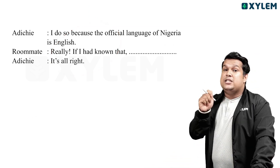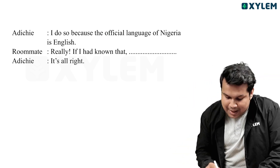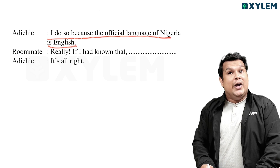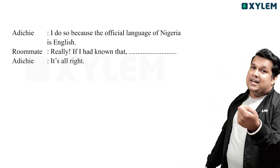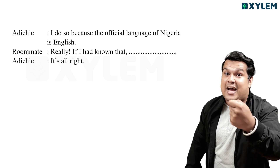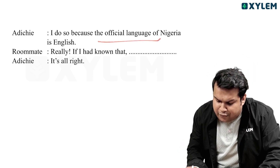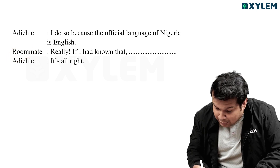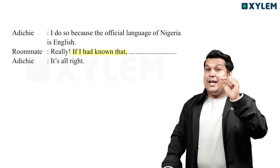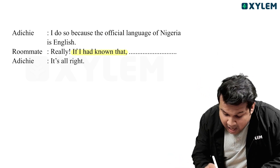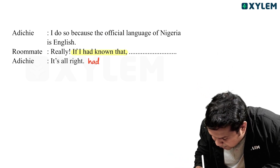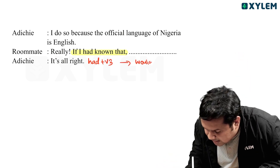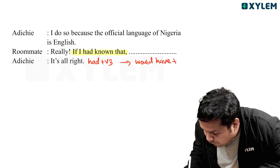This is from the chapter 'The Danger of a Single Story,' unit number 3, chapter number 3. The sentence is: 'I do so because the official language of Nigeria is English.' The relevant if-clause here is: 'If I had known that...' — if I had known that. So, had plus V3 in the if-clause, and would have plus V3 in the main clause.